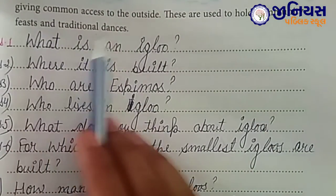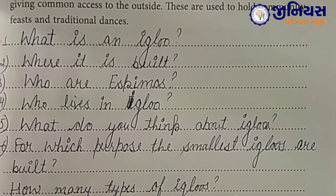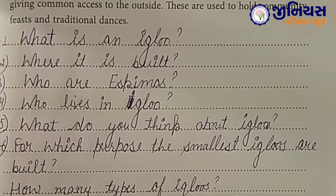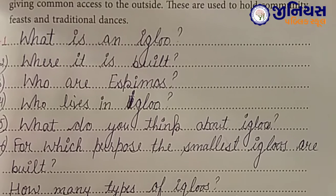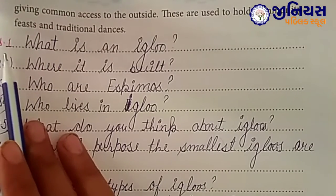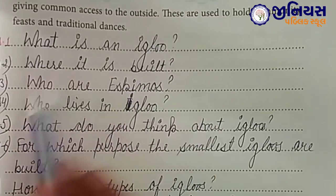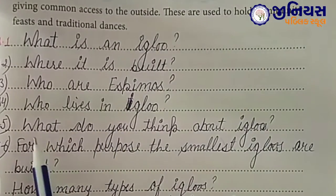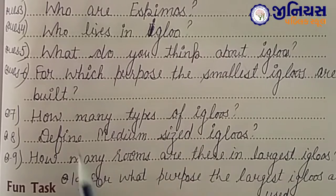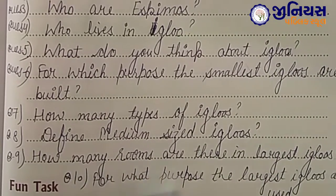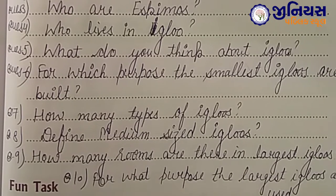These large igloos are used to hold community feasts and traditional dances — jaise humare functions hote hain hotels mein, yeh apne liye ek bada ghar bana lete hain. Ab bachche, is paragraph ke based pe 10 questions banane hain. Questions jaise: What is an igloo? Where is it built? Who are Eskimos? Who lives in igloos? How many types of igloos are there? For which purpose are the smallest igloos built? How many rooms are there in the largest igloos? For what purpose are the largest igloos used?